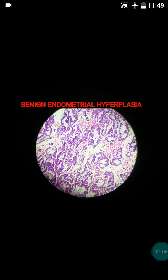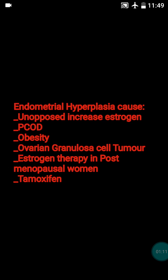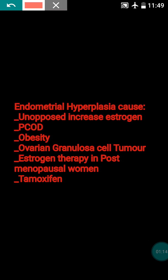Regarding the etiology of this hyperplasia, the common stimulus for proliferation of endometrial glands is increased estrogen. The unopposed action of estrogen leads to endometrial hyperplasia. The estrogen increase can be due to a functional ovarian granulosa cell tumor, which produces estrogen. Another cause is polycystic ovarian disease (PCOD), which is very common nowadays.